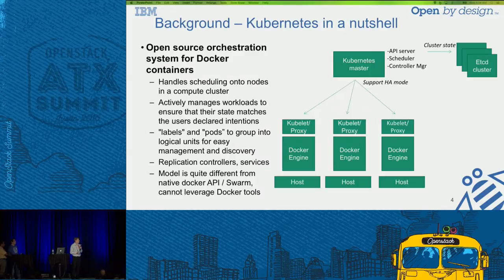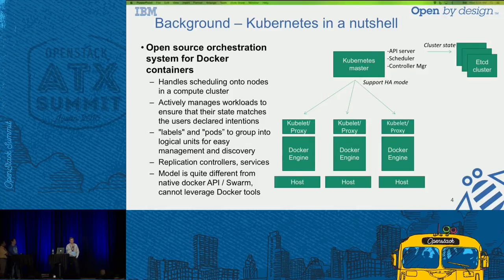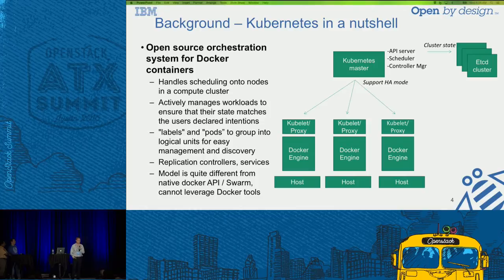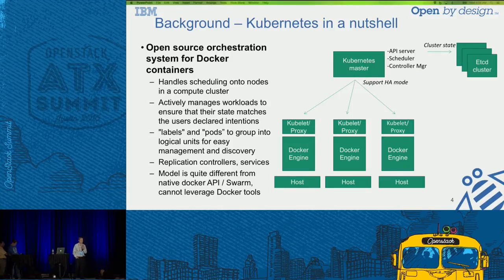Let's talk a bit about Kubernetes. Kubernetes is essentially an open source orchestration system for Docker containers. It was open-sourced by Google more than a year ago and is getting traction in the open source community. It has much more sophistication compared to Swarm in terms of capabilities. It provides the ability to schedule containers on different nodes, but it also provides additional concepts — notably, pods. Pods are essentially a set of containers that are co-located on the same host, share resources like a network namespace, and work together.